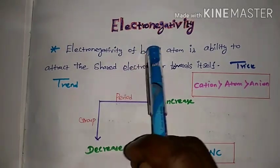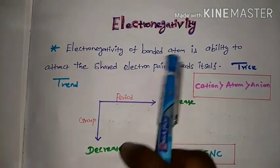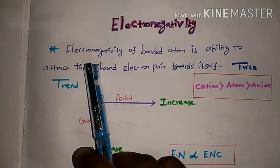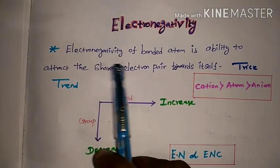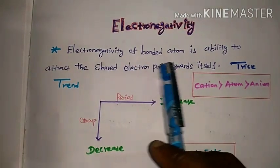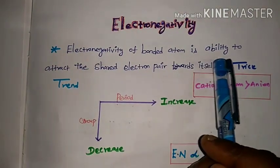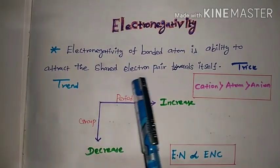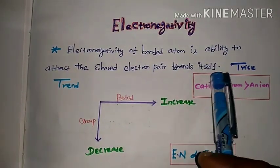As a continuation of electronegativity — what is electronegativity? Electronegativity of a bonded atom is the ability to attract the shared electron pair towards itself.